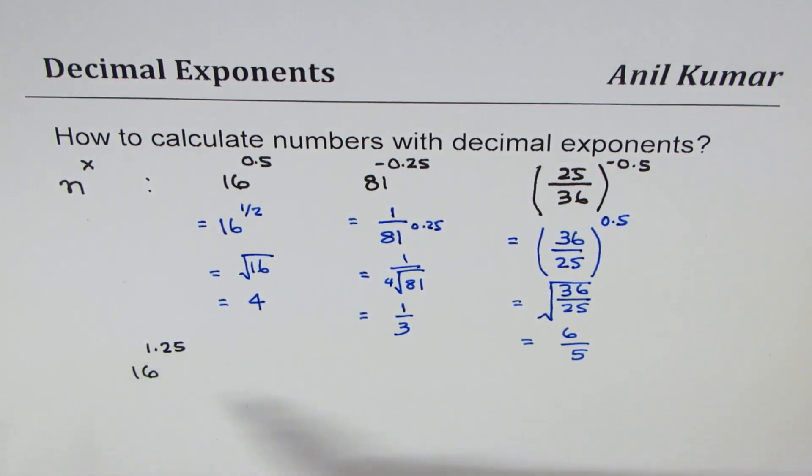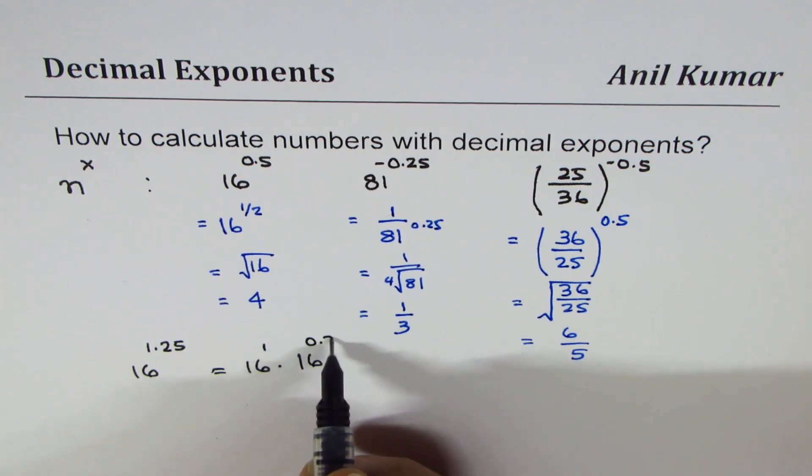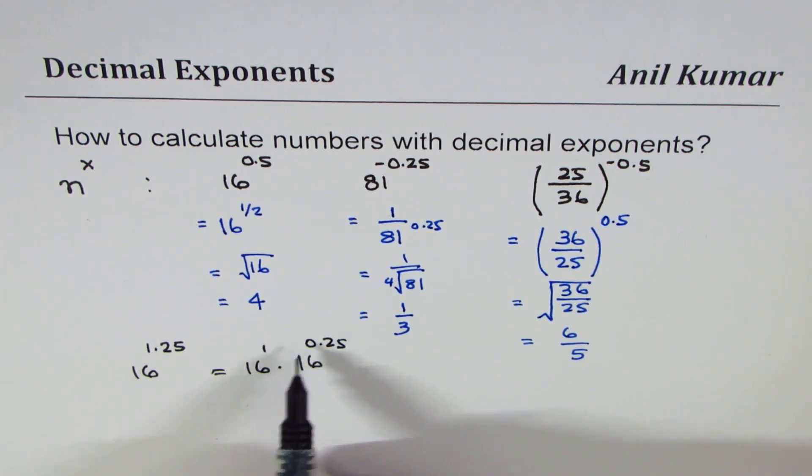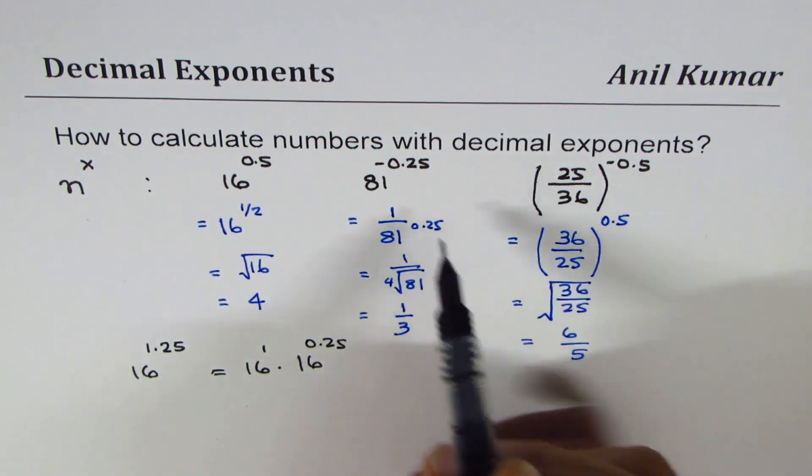Let's take examples like 16 to the power of 1.25. Now if I write 16 to the power of 1.25, it really means 16 to the power of 1 times 16 to the power of 0.25, since when you add them you get 1.25. 0.25 as you have seen is the fourth root.